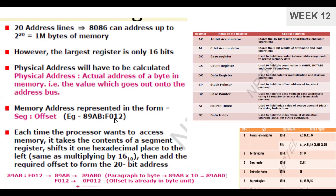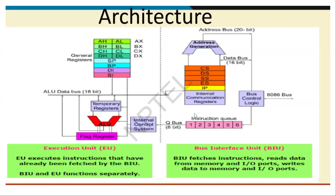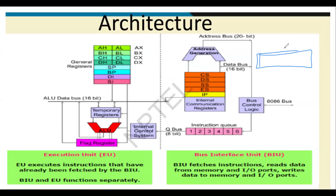Before going into that, we will see the architecture of 8086. In the 8086, they developed the parallel pipeline architecture for the first time. The three pipeline stages — fetch, decode, and execute — are implemented in this 8086 architecture. These three stages operate in parallel.